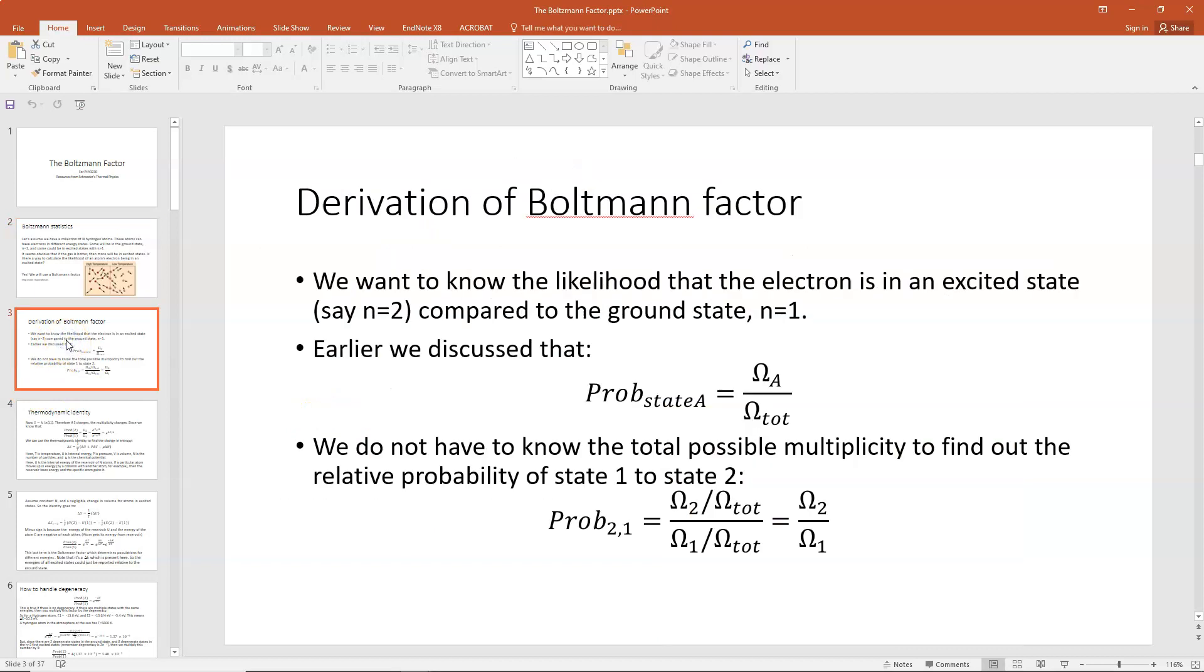Let me derive a Boltzmann factor for you really quickly. Let's say we want to know the likelihood that the electron is in an excited state, say the first excited state where n=2, and we're going to compare that to the likelihood that it's in the ground state, n=1. Remember that we said any probability would be equal to the multiplicity of the state of interest, we'll call it omega_a, divided by the total multiplicity for all possibilities, omega_total.